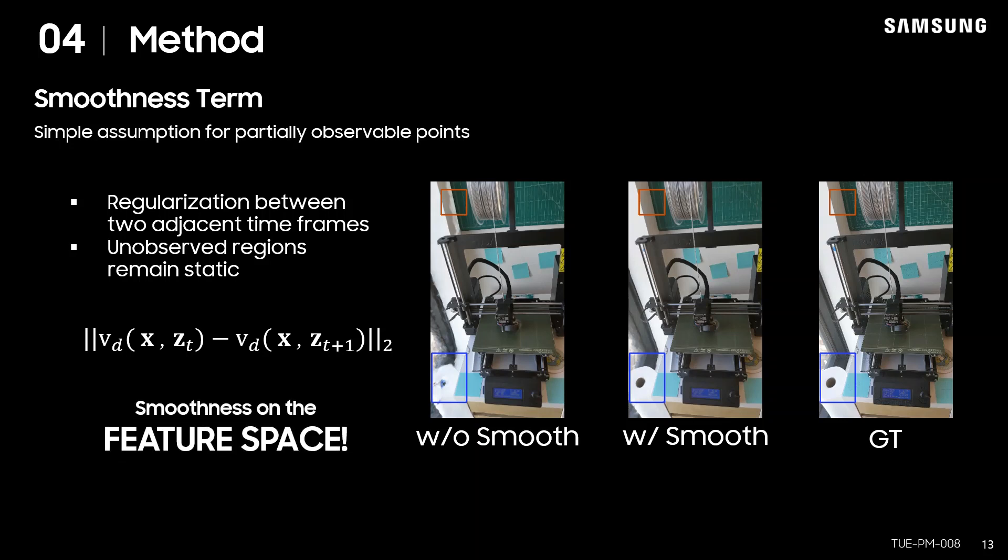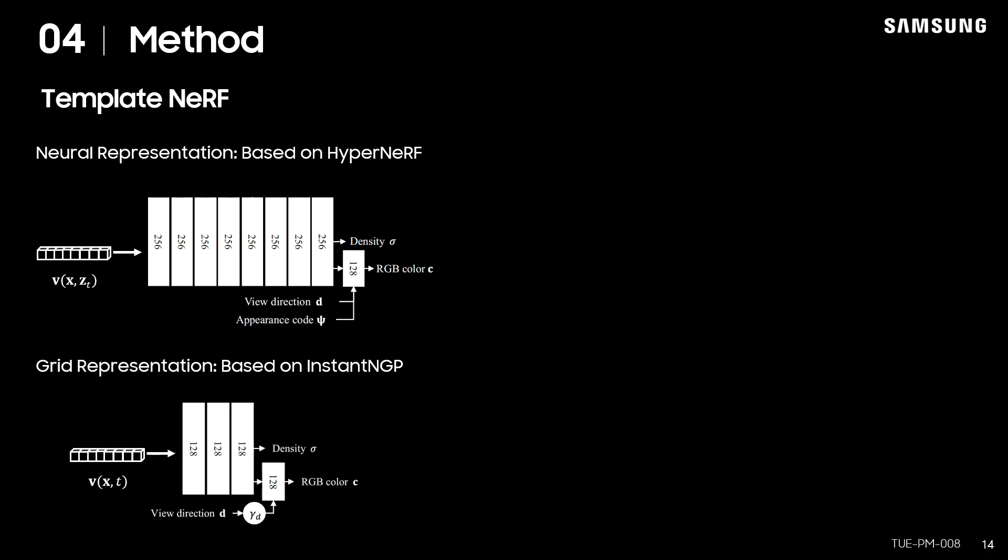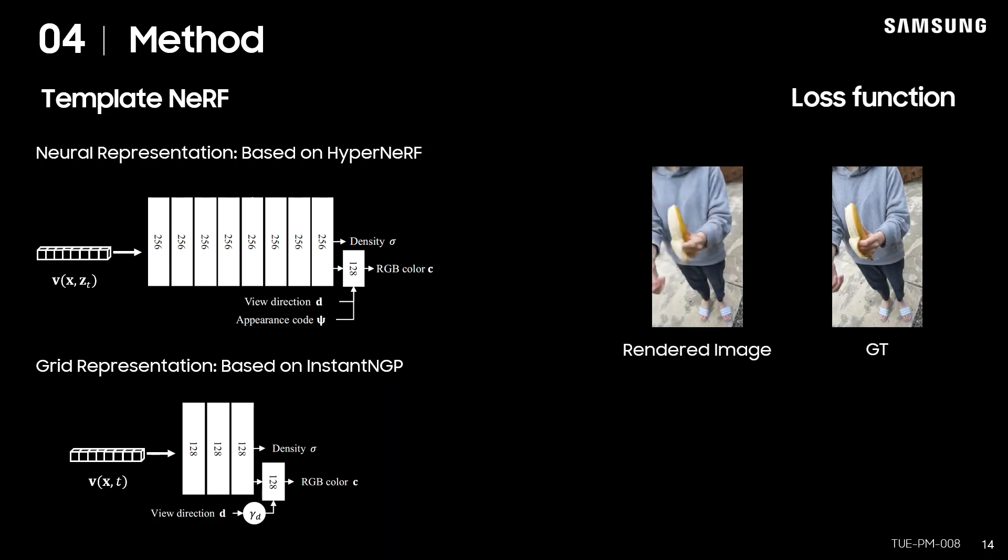Note that we applied it to the feature space rather than applying it directly to 3D space. These extracted features are fed to the template NeRF to estimate RGB color and volume density. Please refer to the paper and supplementary materials for detailed explanation about the network architecture. In consequence, our loss function consists of RGB loss and smoothness term.